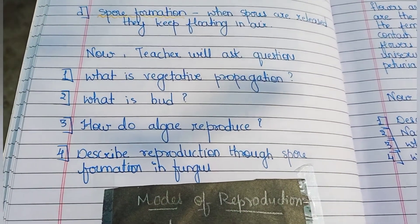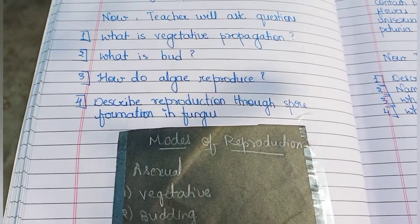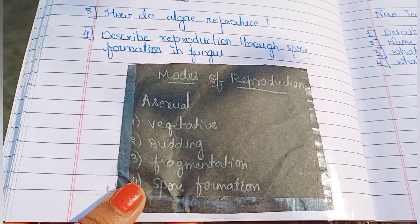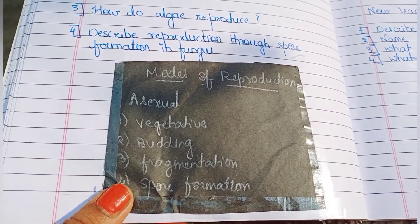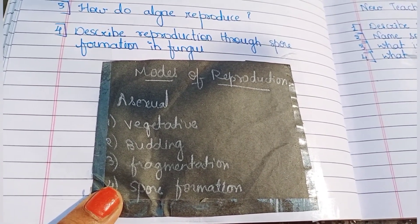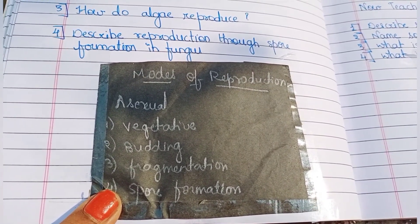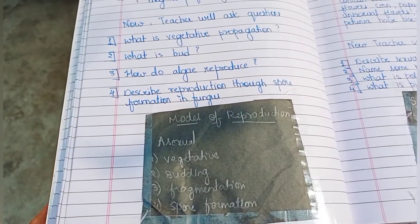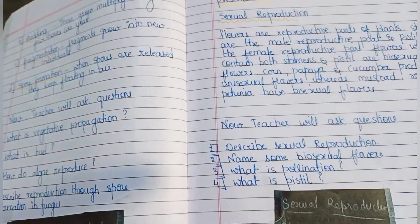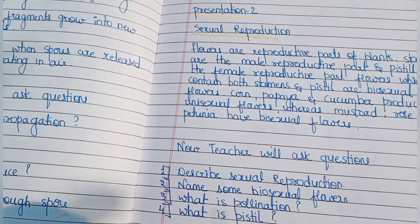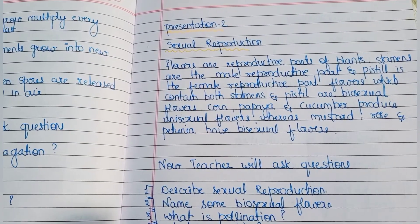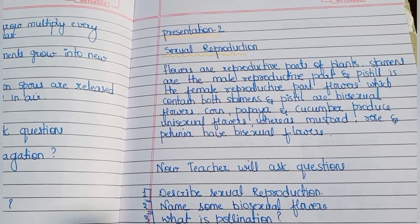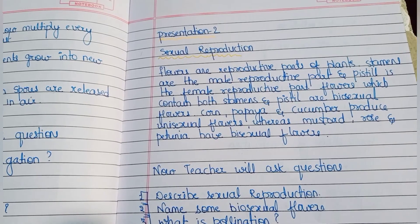After explaining everything properly, we have to ask questions again. Here you can see the blackboard work also — we have to mention the blackboard work and write all the necessary points on the blackboard. Here you can see Presentation Two — again we have to explain everything properly to students for five to six minutes.